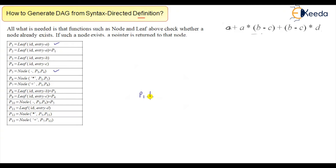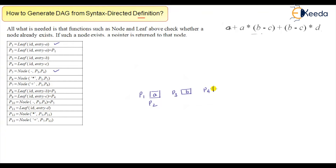p1 is the leaf — it creates a leaf node for 'a'. Then p2 also points to the same leaf node as p1. Then p3 creates a leaf for 'b', and p4 creates a leaf for 'c'. So leaf nodes for a, b, and c have been created.